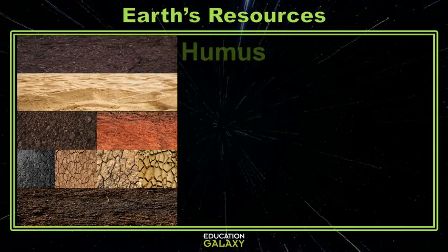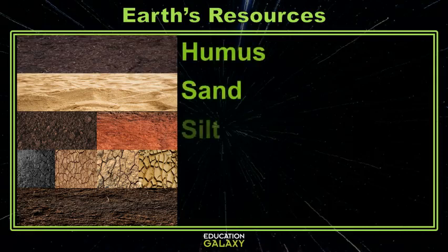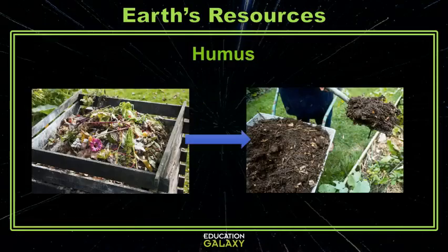There are five different types of soil. We have humus, sand, silt, clay, and loam. But humus — pronounced humus — is completely different than the rest because it's actually dead and decomposing bits of plants and leaves.